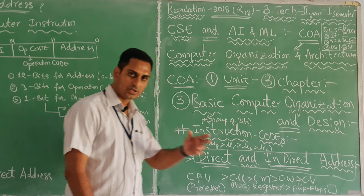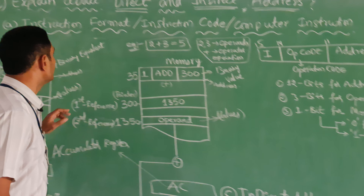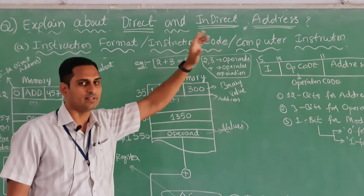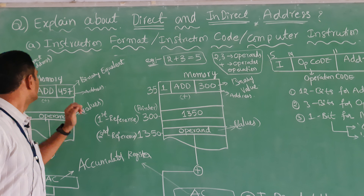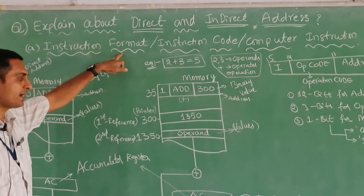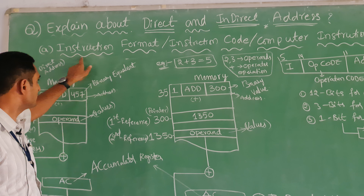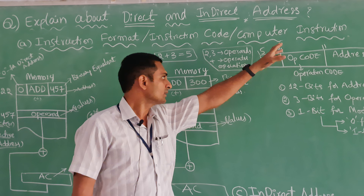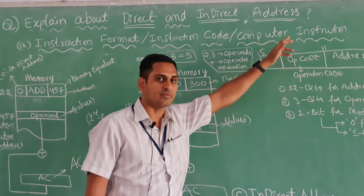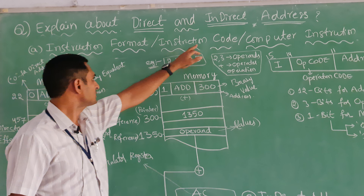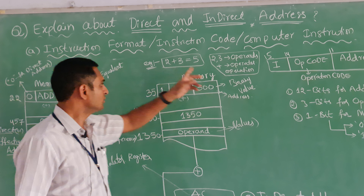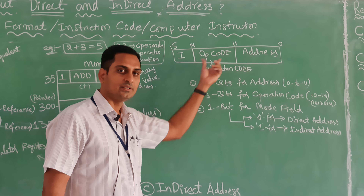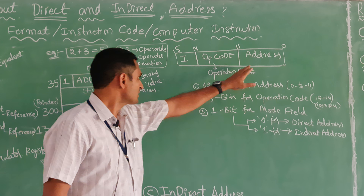We also have registers, RAM, and ROM, which come into this topic of direct and indirect address. A common exam question is: explain direct and indirect address. So come to this side. Here we have an instruction format diagram. Inside a computer processor register we have instructions, rules, and commands — instruction code formats — and this diagram has three fields, three boxes.